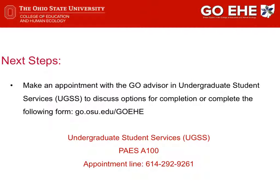Thank you for completing the information session for the Global Option in Education and Human Ecology. We are excited to work with you! If you are interested in pursuing the Global Option, please make an appointment with the GOE Advisor in Undergraduate Student Services. To make this appointment, you may call 614-292-9261 or complete the interest form at go.osu.edu/GOEHE. Thank you!